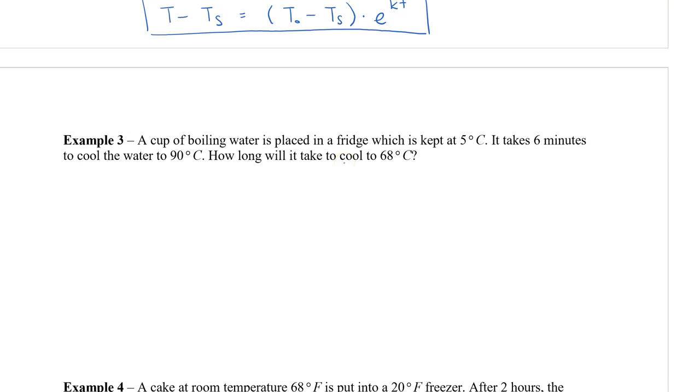We're going to first set up, we're going to use Newton's method, T minus Ts, to first find our proportionality constant. So we have 90, which is our final temperature, and the surrounding temperature, the temperature of the fridge is 5. So 90 minus 5 is equal to T naught, or T naught is initial temperature. Since it's boiling water, that water is going to be 100 degrees Celsius minus the surrounding temperature again, which is 5, times e to the power of 6 times k. We know that it takes 6 minutes for the temperature to decrease from 100 to 90 with the surrounding temperature of 5.